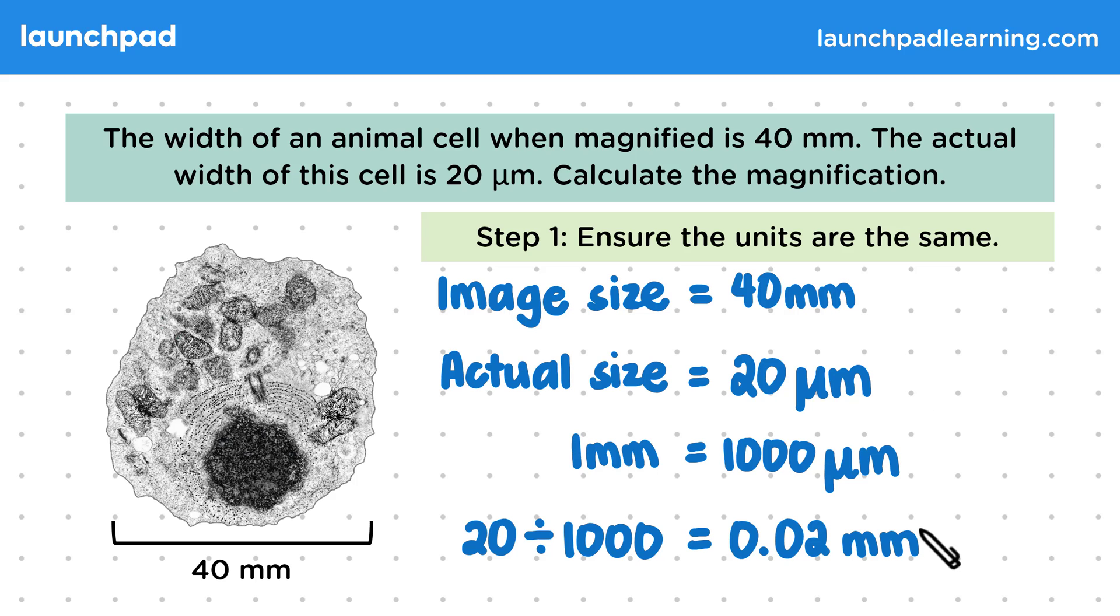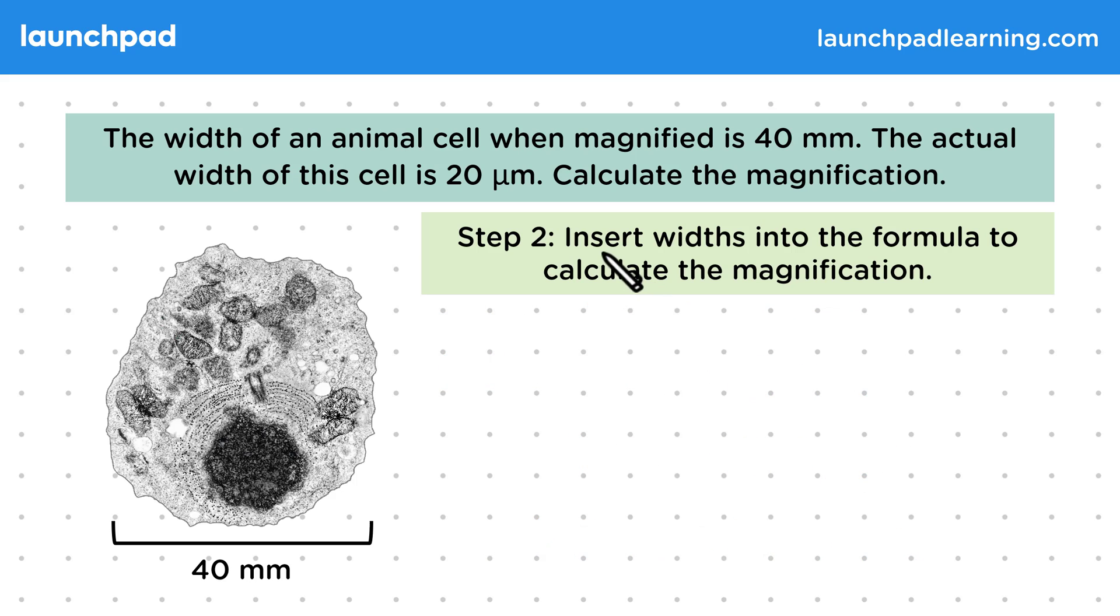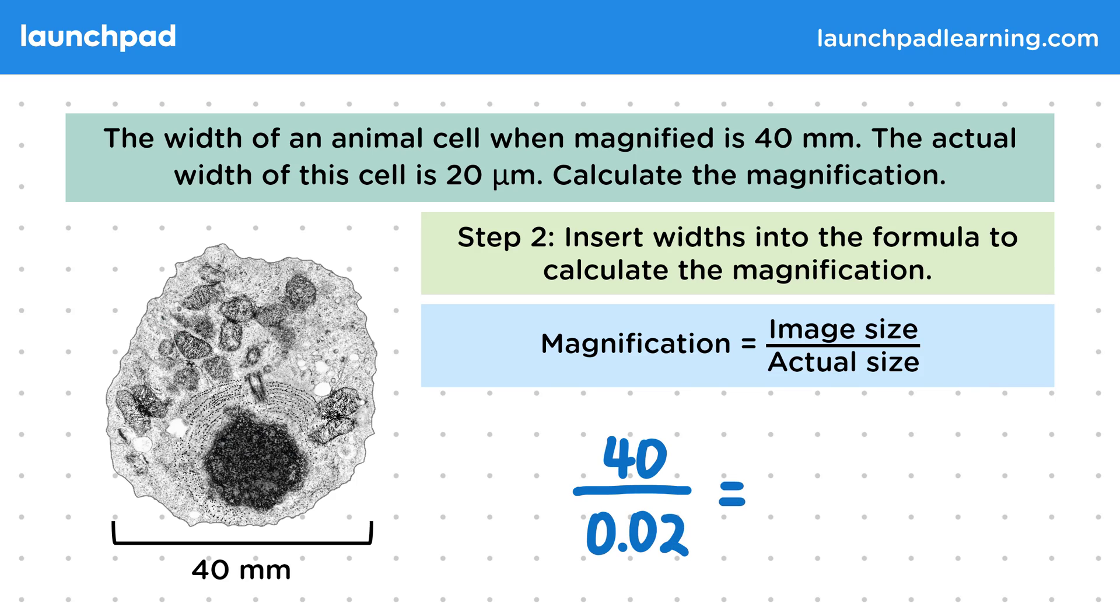Okay, so now the units are the same, what's the next step? Now we need to insert widths into the formula to calculate the magnification. So a quick reminder of that equation: magnification equals image size divided by actual size. For this practice, we will do 40 divided by 0.02, which equals 2000. Remember that there are no units for magnification because it's a ratio. However, we usually put a multiplication sign in front of the value to show that the image has been multiplied by this amount.